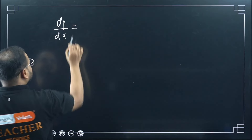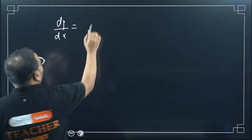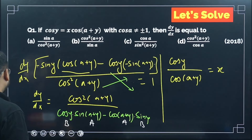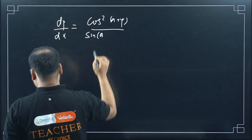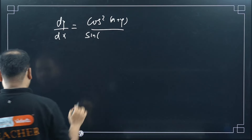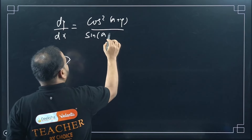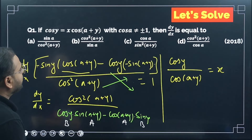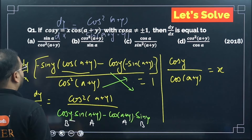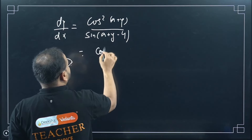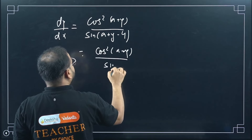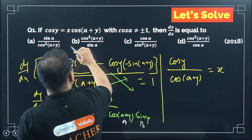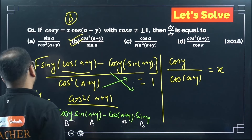So dy/dx equals cos²(A+y) upon sin(A+y minus y), which simplifies to cos²(A+y) upon sin A. The answer is option B. Please award yourself one mark for this.